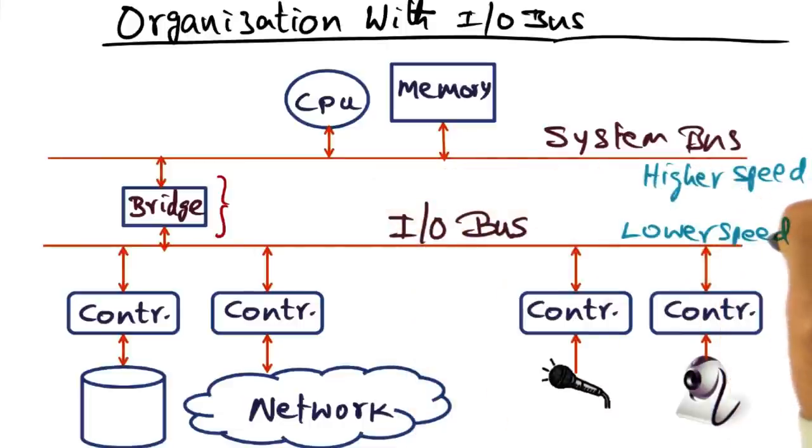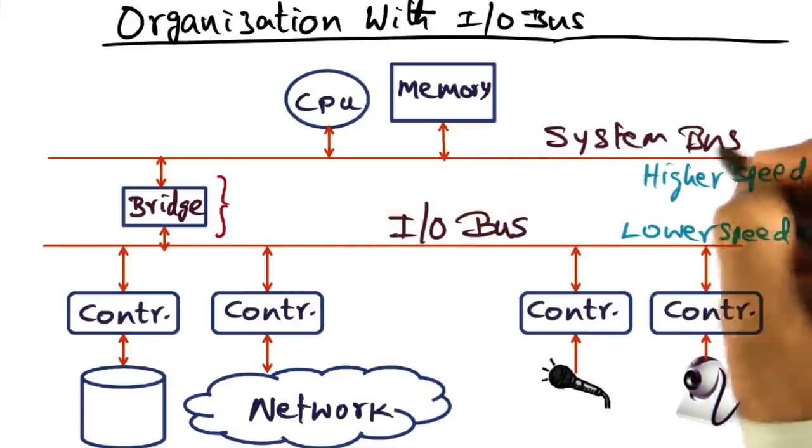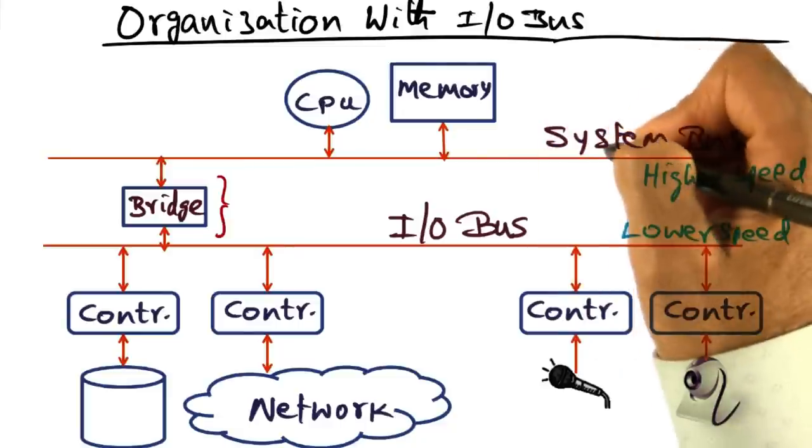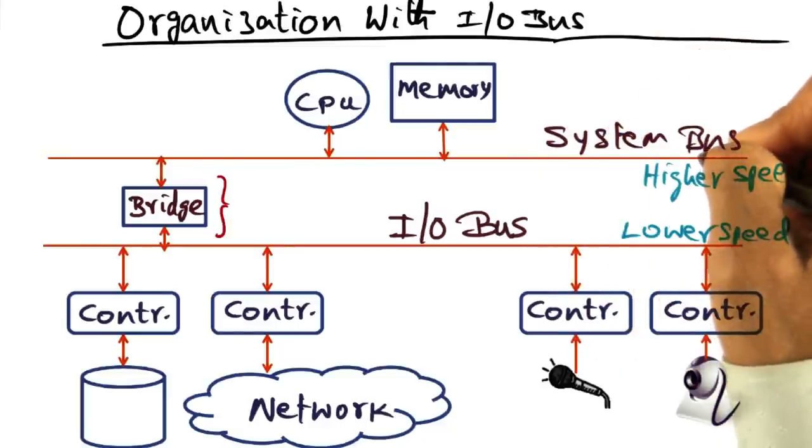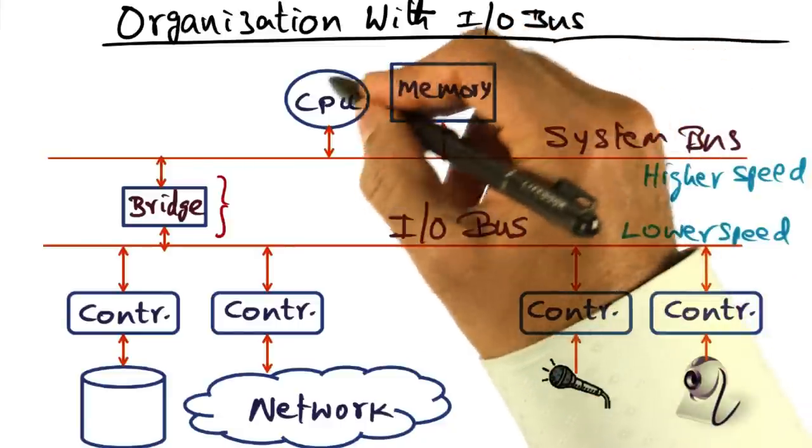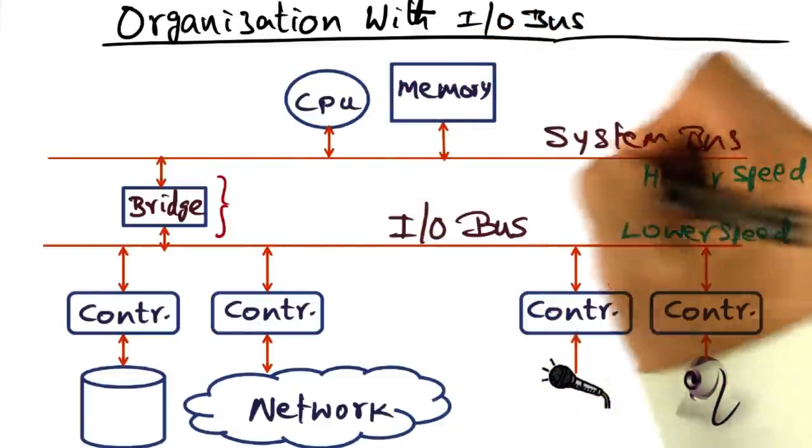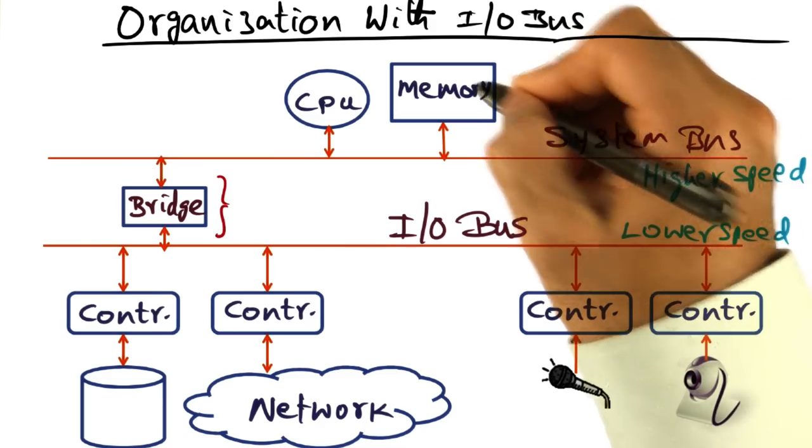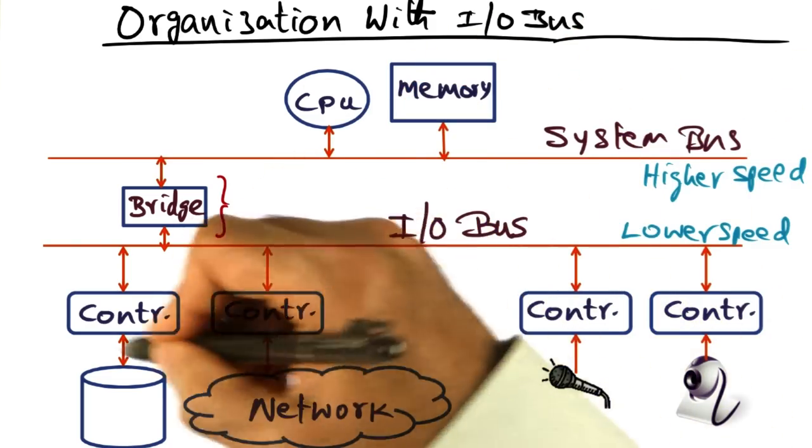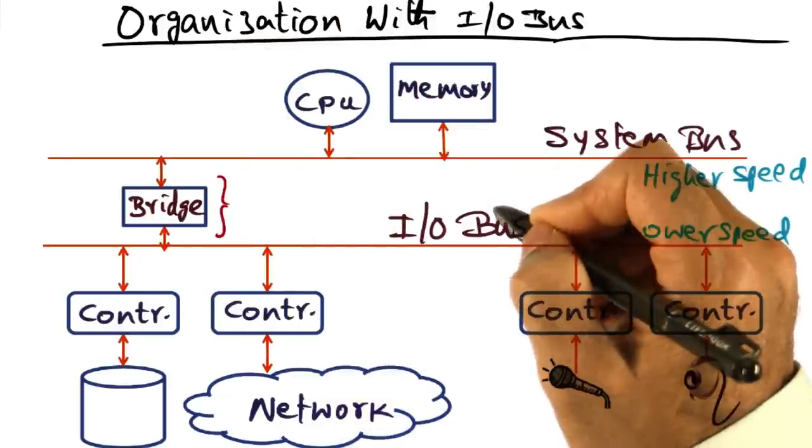The IO bus is typically lower speed than the higher speed system bus, and the cumulative bandwidth that is needed on the system bus is usually much higher because it has to cater to all the clients that may want to access the memory, either from the CPU or from any of these devices coming through this bridge.